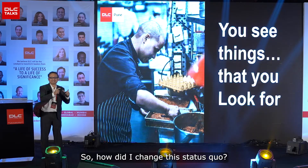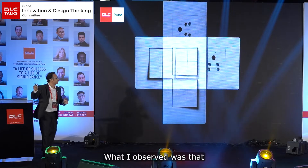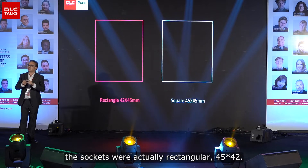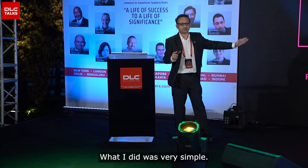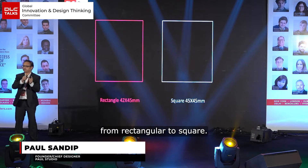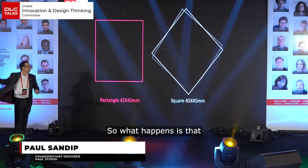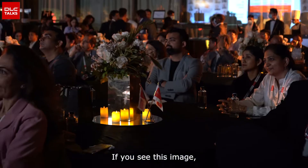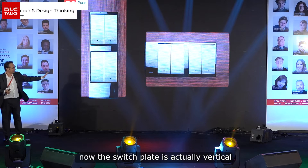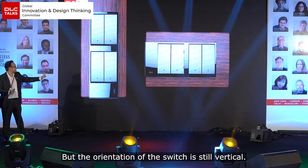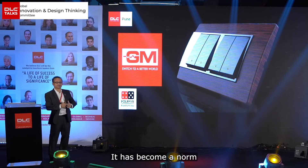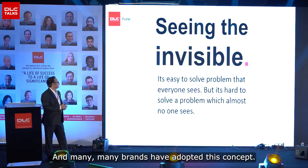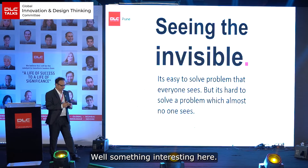To change the status quo, I observed that the regular switch plates available in the market had a socket that was 45 by 42mm — rectangular. What I did was very simple: I changed the socket size from rectangular to square. Because if it's square, you can rotate it to any degree and it will still look the same. Now the switch plate can be placed vertically or horizontally, but the orientation of the switches remains consistent and causes no stress. This has become a norm in the trade and many brands have adopted this concept.